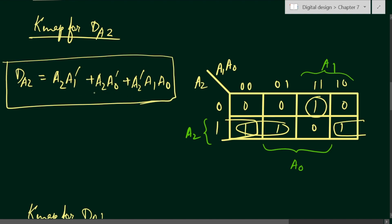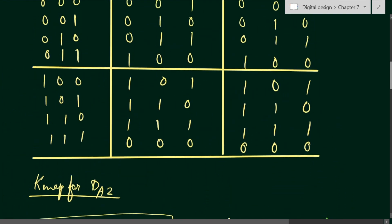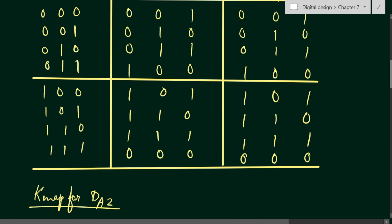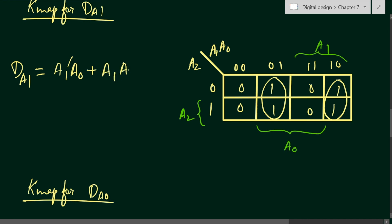Now we find the K-map for DA1. The DA1 values are: 0, 1, 1, 0, 0, 1, 1, 0. Placing these in the K-map and grouping, we get two product terms: DA1 = Ā1·A0 + A1·Ā0.